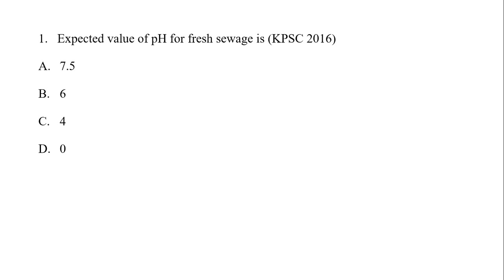Over time, anaerobic digestion and anaerobic bacteria make the sewage acidic. Fresh sewage is alkaline with a pH above 7. The correct answer corresponds to the alkaline range, so that is the answer.